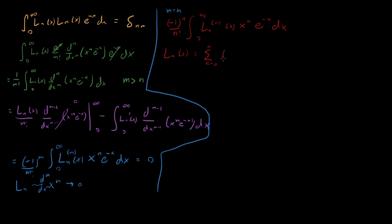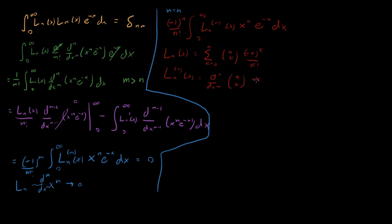The series definition of L_n is the sum from k equals 0 to n of n-choose-k times (−x)^k over k factorial. When we take n derivatives of this sum, the only term that contributes is the k equals n term, because all earlier terms are x raised to a power less than n, and n derivatives of those will be 0. So the only term we need is n-choose-n times (−x)^n over n factorial.